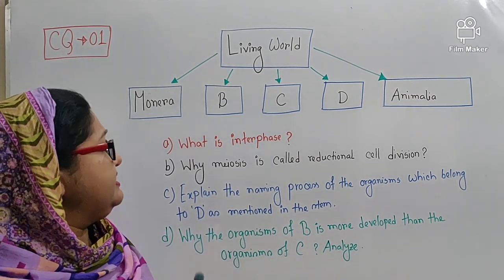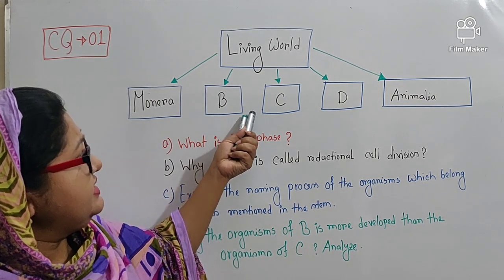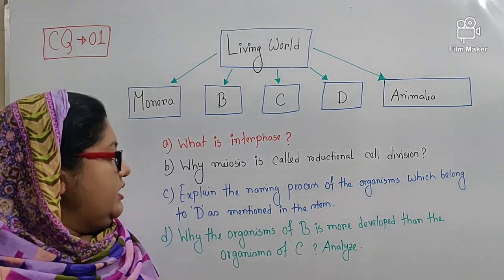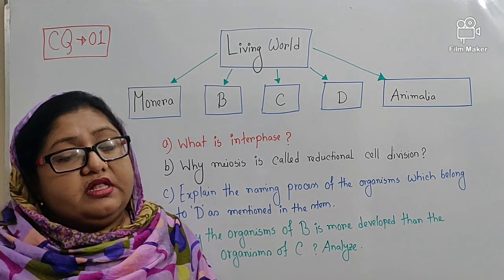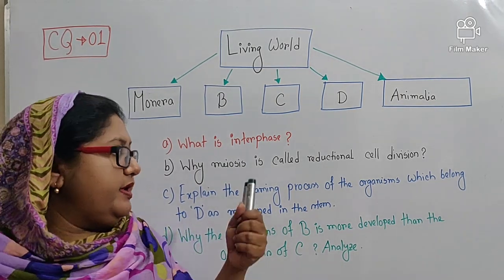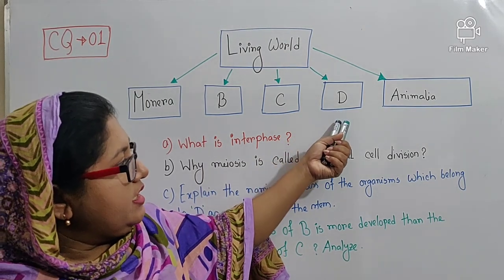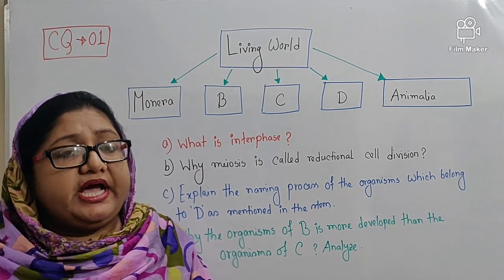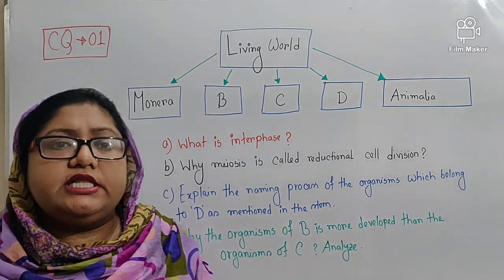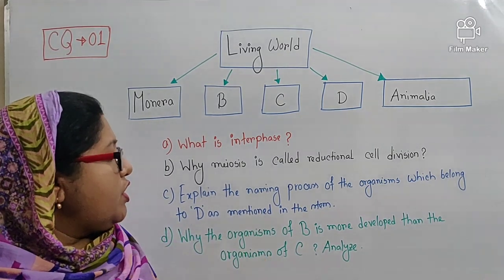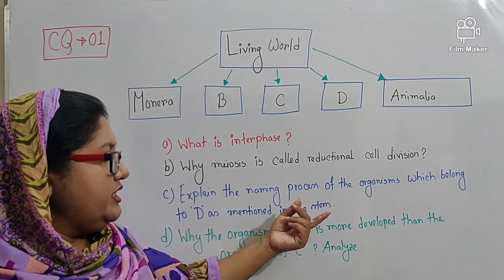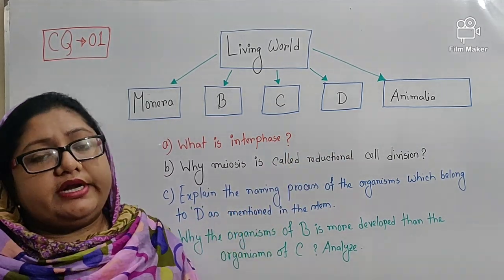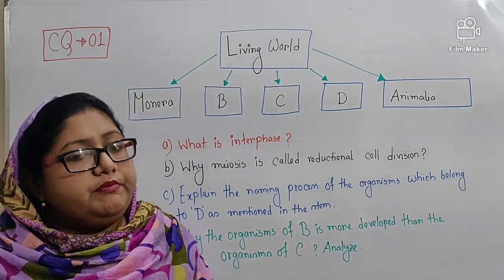You will write the answer in this way. In the whole stem, D indicates Kingdom Plantae. The organisms of Kingdom Plantae are given names by ICBN, that is the International Code of Botanical Nomenclature. The rules of the naming process of the organisms of Kingdom Plantae are given below. Then you will write down the rules one by one according to your book.